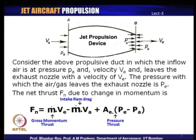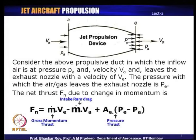The net thrust F_n equals m-dot times V_e as the gross momentum thrust from the exhaust — a direct result of Newton's third law. The second term, which is negative, is m-dot times V_a. Here, m-dot is the mass flow through the engine — the amount of air going inside the device — and the same mass flow comes out at the exit.